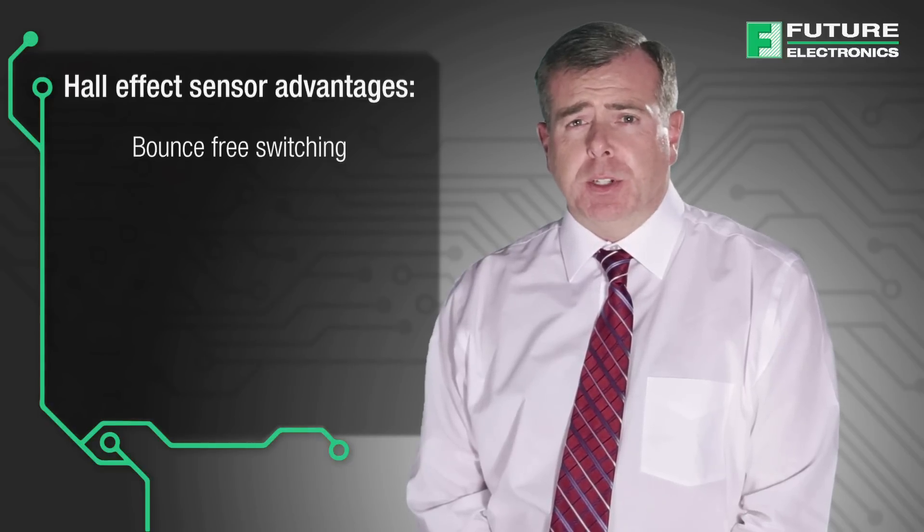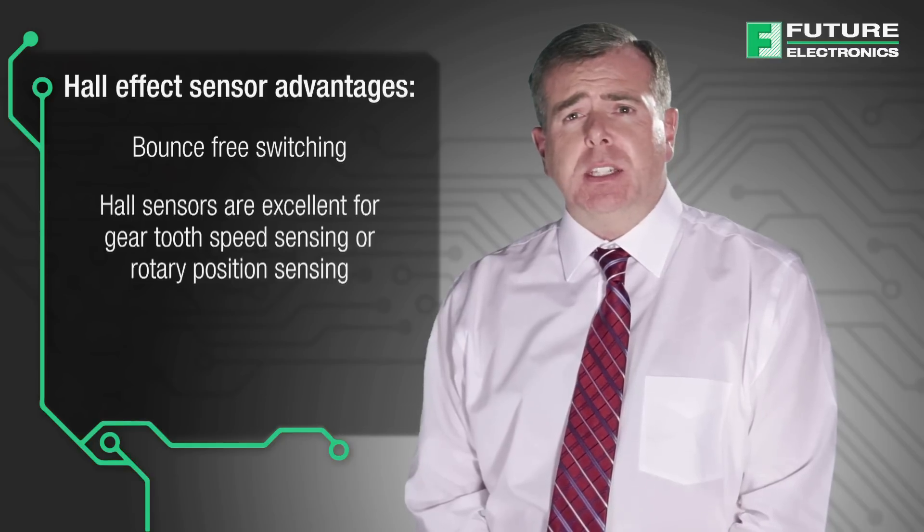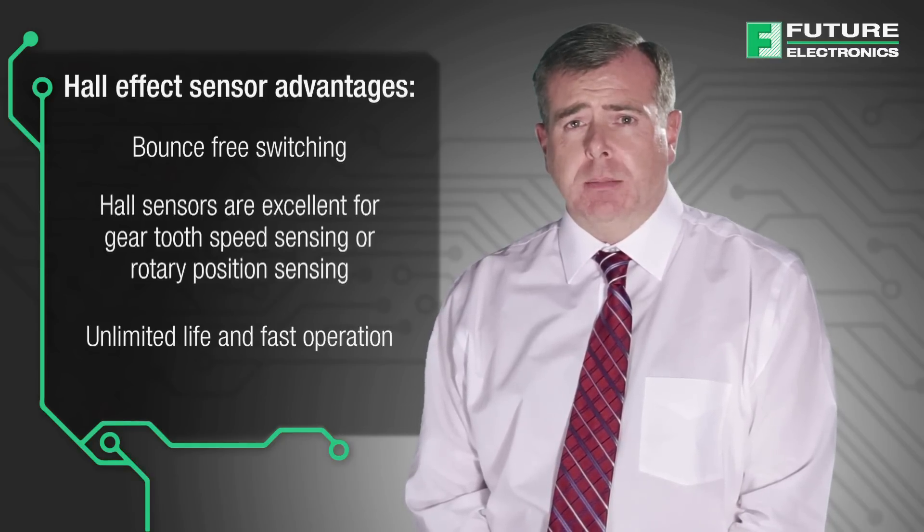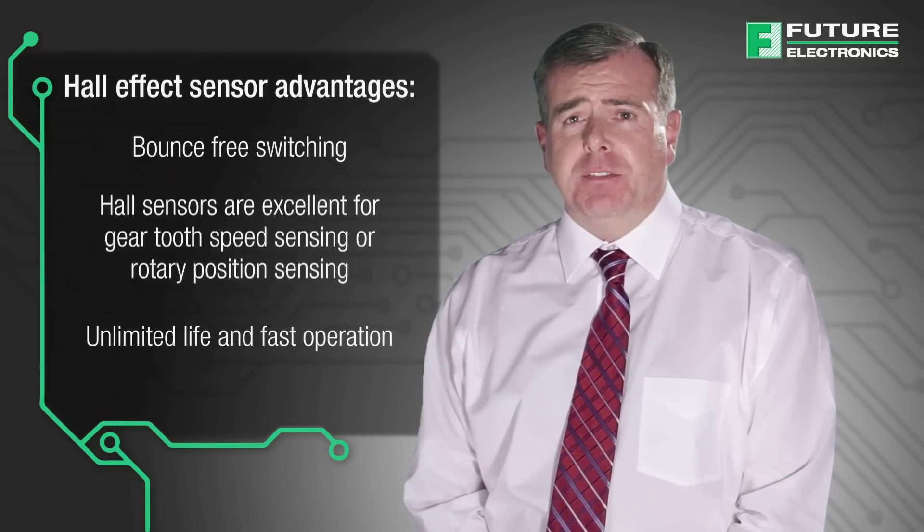You need bounce-free switching. A Hall effect sensor is excellent for gear tooth speed sensing or rotary position sensing, and unlimited life and fast operation.